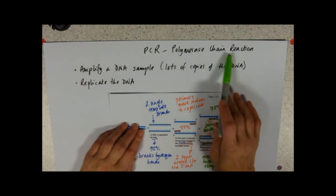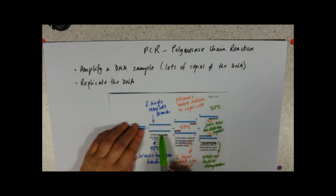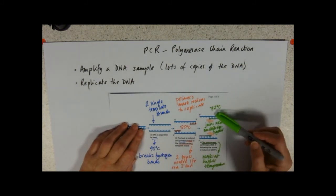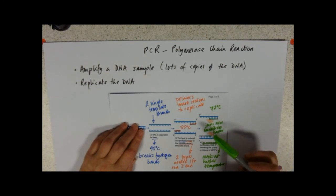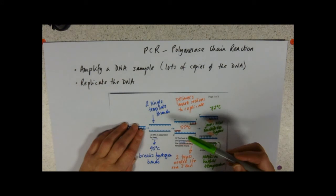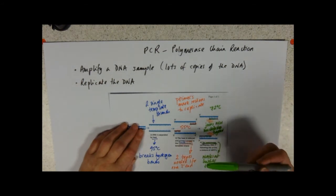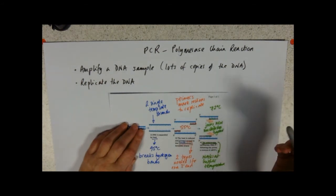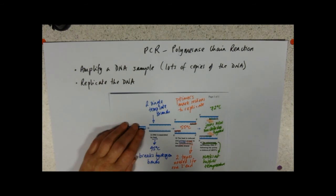And chain reaction. We then do it again. So we separate those two identical DNA molecules into four template strands. Primers, you know, lower the temperature. Add the primers in. Primers anneal. Raise the temperature. Put your TAC polymerase and your nucleotides in. And the whole thing will go again.